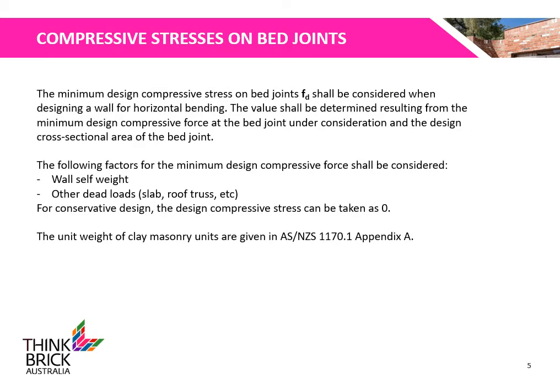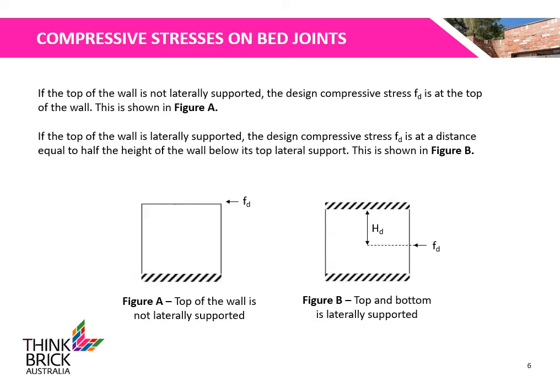The minimum design compressive stress on bed joints, Fd, shall be considered when designing a wall for horizontal bending. Its value shall be determined from the minimum design compressive force at the bed joint under consideration and the design cross-sectional area of the bed joint. Factors such as the wall's self-weight and other dead loads — such as slabs or roof trusses — shall be considered. If the top of the wall is not laterally supported, the design compressive stress Fd is at the top of the wall, as shown in Figure A.